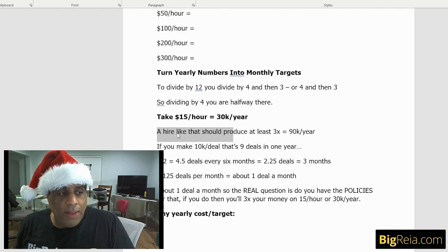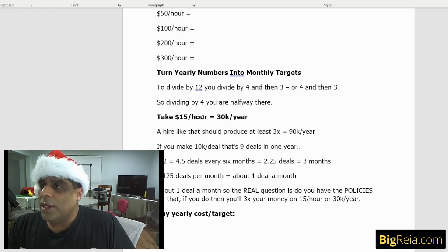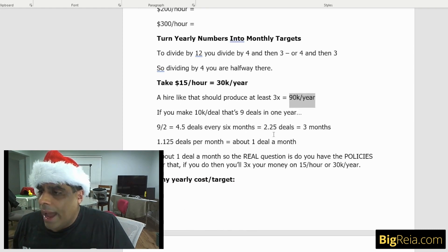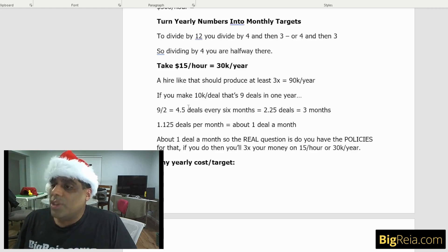A hire like that, if we're hiring someone like that, they should produce at least three times what you're paying. So if we're hiring somebody for $15 an hour, they should be making us at least, or that means we're paying them 30 grand a year, they should be making you at least $90,000 a year. So how do we figure out what we need to do to make that happen? If you make $10,000 per deal, that's nine deals in one year that you need to make.